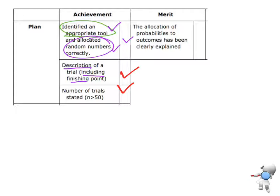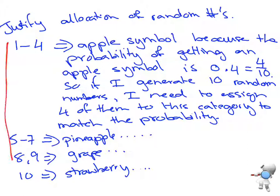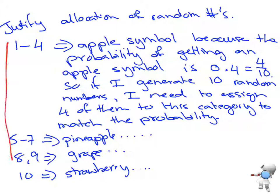For merit, I need to show that the allocation of probabilities to outcomes has been clearly explained. That's what this justification page does. I've only finished the first one — apple — but if I complete all four symbols in the same way, that fulfills the merit requirement for explaining the allocation.